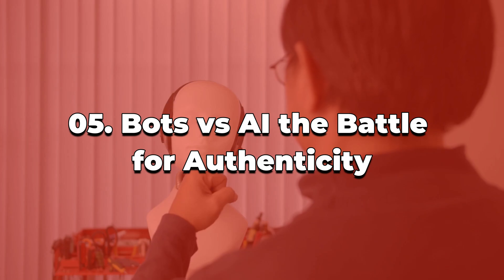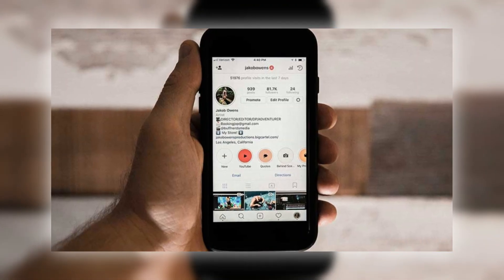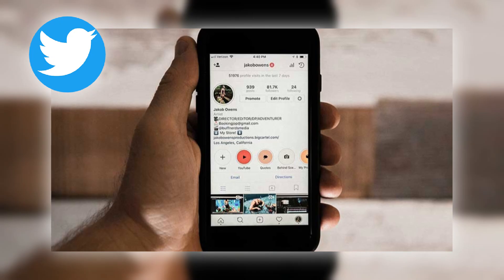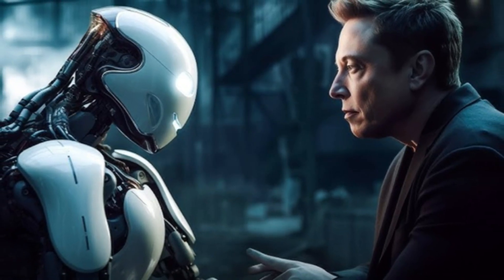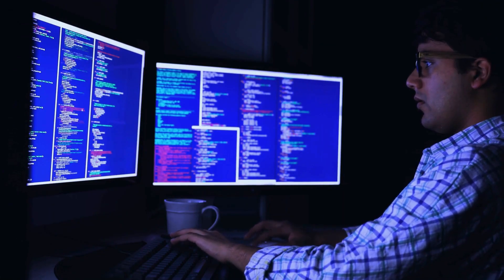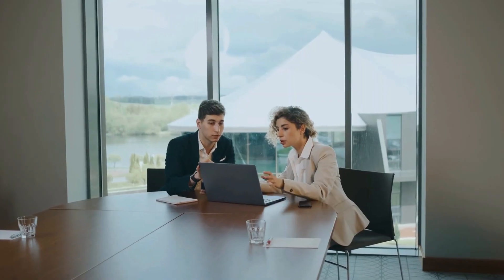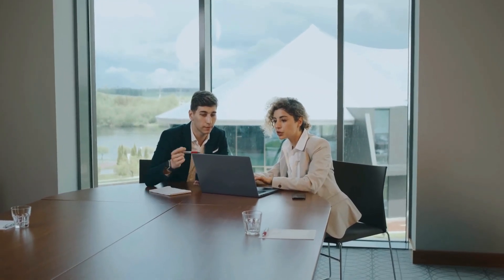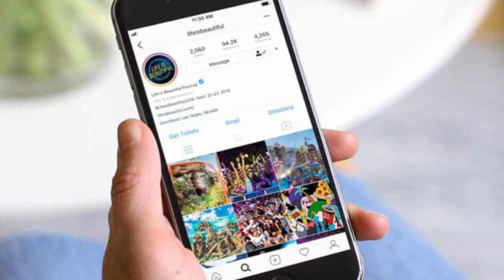Bots versus AI, the battle for authenticity. Bots and spam accounts have long plagued Twitter, eroding trust in the platform. Musk's AI vision includes advanced detection systems to address this problem head-on. These AI systems would differentiate between authentic users and automated accounts, reducing spam and preventing the manipulation of conversations.